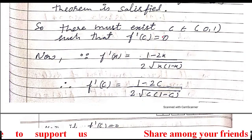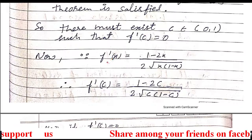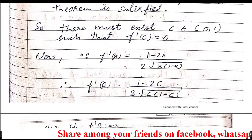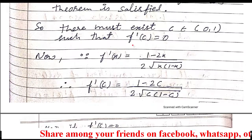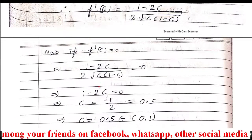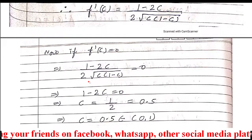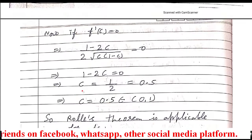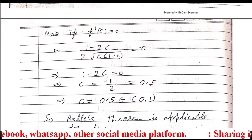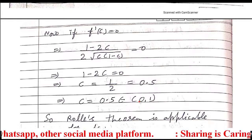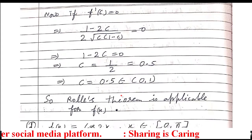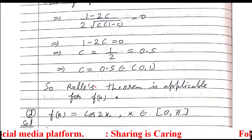Now we solve for c. We take f'(x) as calculated before, replace x with c, and set it equal to 0. Solving gives c = 0.5. We check that 0.5 belongs to the open interval (0,1) — it does. Hence Rolle's theorem is satisfied for part C.